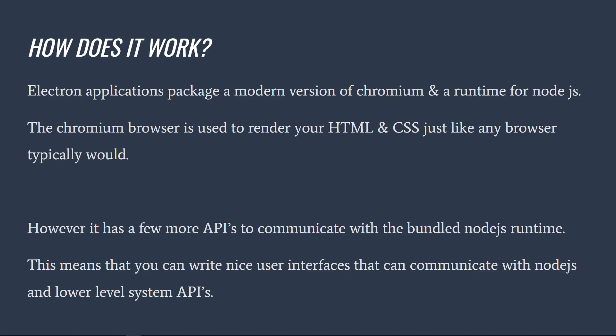So what does that actually mean? When you install an Electron application, it bundles Chromium — basically the Google Chrome rendering engine — alongside a runtime of Node.js. That runtime is just an interpreter to run Node code on a user's machine, because maybe some users like my grandma won't have Node installed.